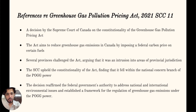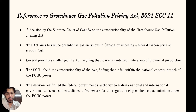In its decision, the court found that the Act was within the national concern branch of the POG power because climate change was a matter of national concern with international and extra-provincial dimensions. The court also held that the Act was a valid exercise of the federal government's power to regulate trade and commerce under Section 91.2 of the Constitution Act. The decision was a significant victory for the federal government, allowing it to continue implementing national environmental policies including measures to combat climate change. This case represents a significant development in the interpretation of POG power and reinforces the importance of balancing federal and provincial powers.